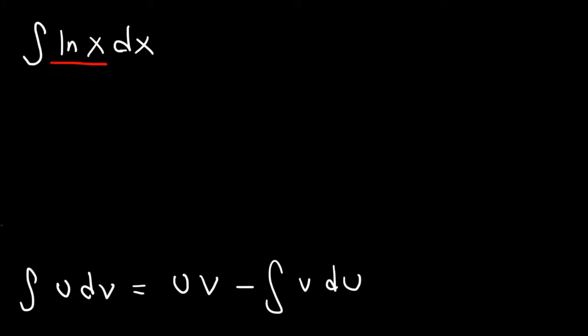So what we're going to do is make u equal to ln x. And so du, the derivative of ln x, is going to be 1 over x times dx. dx, we're going to make it equal to dv.